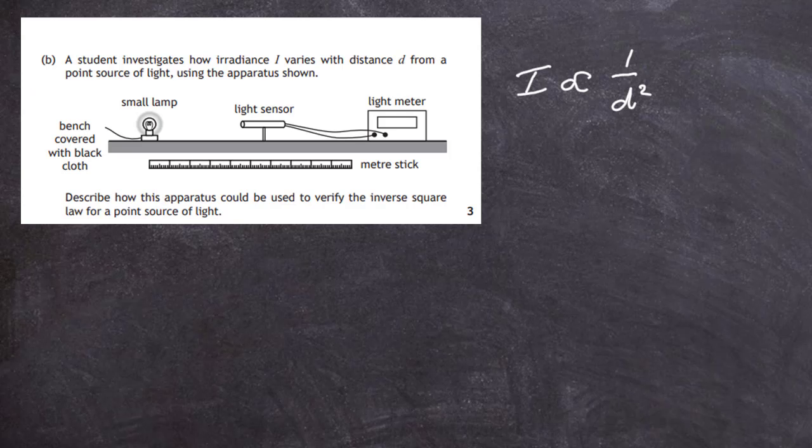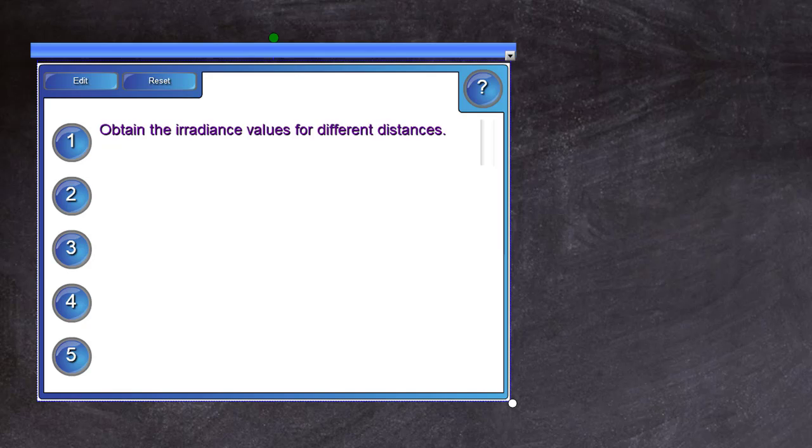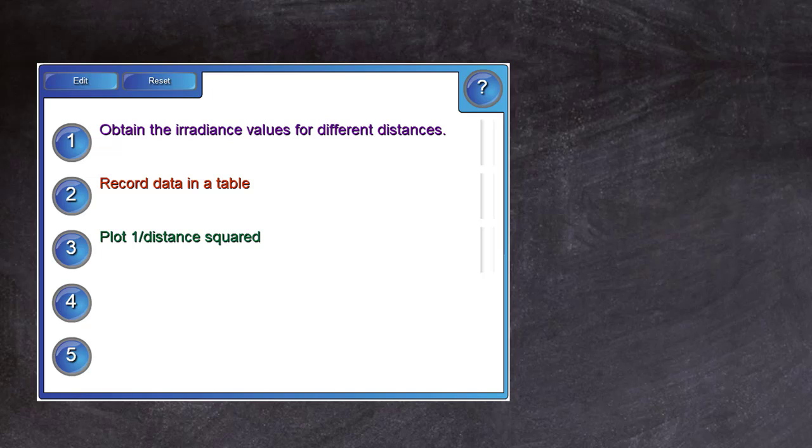To finally get the relationship, we'd have to do the following. Number one, obtain the irradiance values for different distances using your ruler and light meter. We would record the data in a table. We would plot 1 upon distance squared, so we have the distance but change it into 1 upon distance squared, and plot that against the value for the specific irradiance.